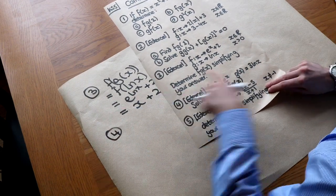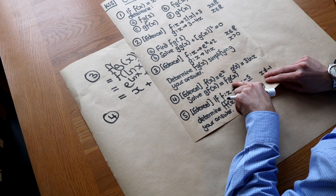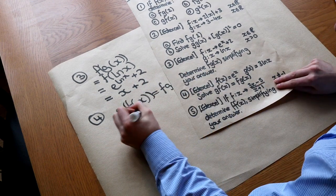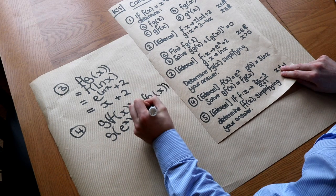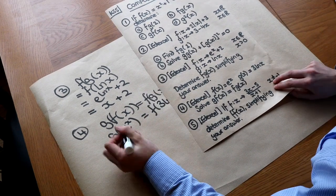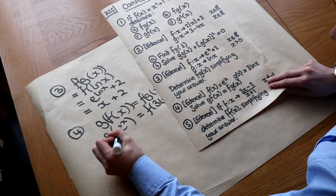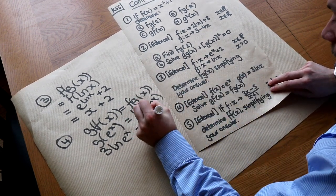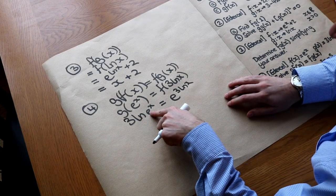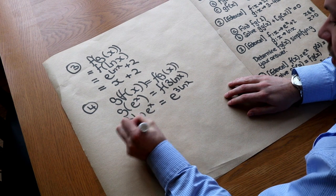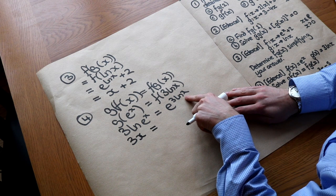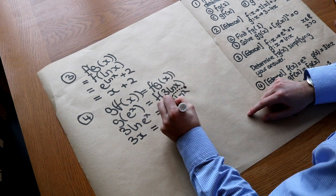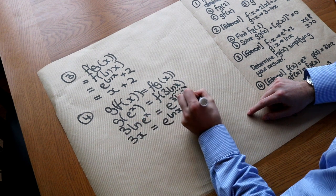Question 4: f(x) = e^x, g(x) = 3ln(x). Solve g(f(x)) = f(g(x)). g(f(x)) = g(e^x) = 3ln(e^x) = 3x. f(g(x)) = f(3ln x) = e^(3ln x). Using laws of logs, 3ln x = ln(x³), so e^(ln(x³)) = x³. Setting them equal: 3x = x³.